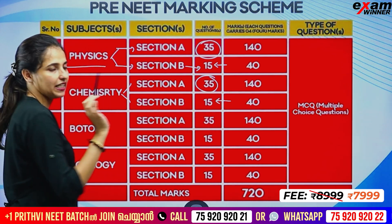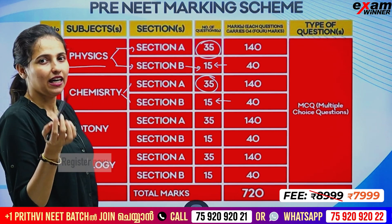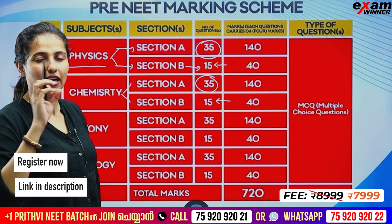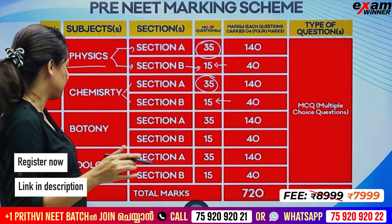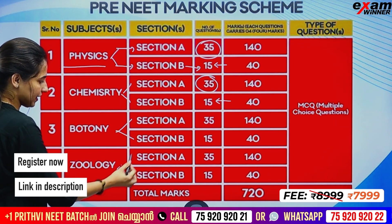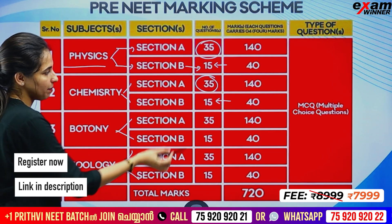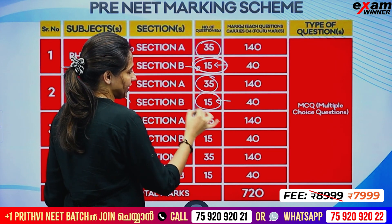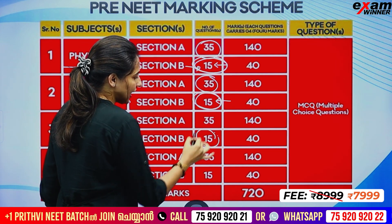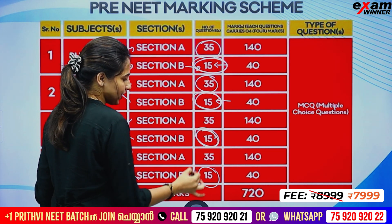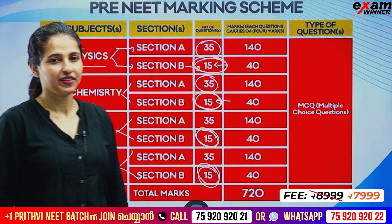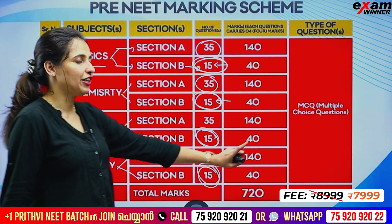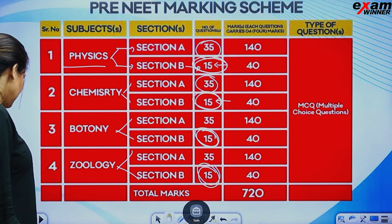In Chemistry, Section A and B follow the same pattern — 15 questions in Section B but you attempt only 10. We will do the valuation accordingly. In Botany and Zoology, the same pattern applies — in Section B you will have a choice and attempt 10 questions. The total is 720 marks, same as NEET.